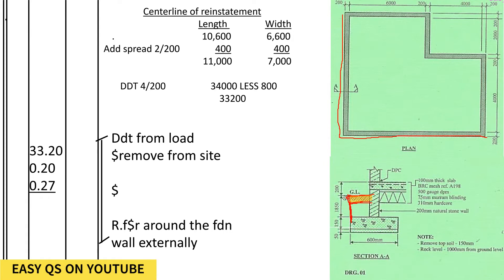We shall take the center line of reinstatement, which is the center of this spread. We go all around, so we shall take the external dimensions of this diagram. We take the external dimension — external is up to there — we add the spread on both sides. When you are adding the spread, we shall add a half.